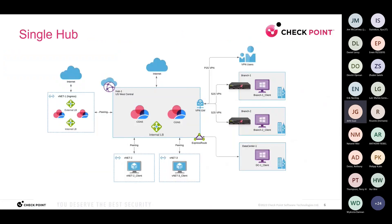I'm going to go over some reference architectures. This is a single hub design. Starting from left to right: on the left we have our ingress cluster, for any applications you'd like to publish to the internet. Inside the hub we have various VNets — VNet 2, VNet 3 — plus branch offices and data centers all connected into the hub, with the internal load balancer as the default gateway. Traffic coming from VNet 2 to VNet 3 will traverse the internal load balancer, which load balances traffic between the two CloudGuard gateways. After verifying the traffic is secure, we allow it through.